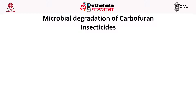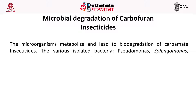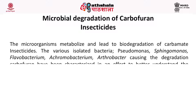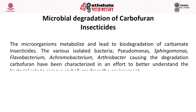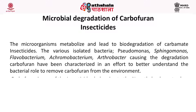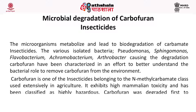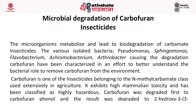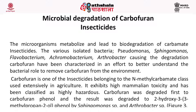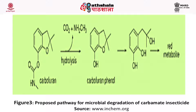Next is microbial degradation of carbamate insecticide. Microorganisms metabolize and lead to biodegradation of carbamate insecticides, and also help to degrade carbofuran. Various isolated bacteria — Pseudomonas, Flavobacterium, Arthrobacter, etc. — causing degradation of carbamate have been characterized to better understand the bacterial role in removing carbamate from the environment. Carbofuran is one insecticide belonging to the N-methyl carbamate class used extensively in agriculture; it exhibits high mammalian toxicity and has been classified as highly hazardous. Carbofuran was degraded first to carbofuran phenol, which was then degraded to 2-hydroxy-3-butenyl phenol by Sphingomonas species and Arthrobacter species. The pathway for microbial degradation of carbamate insecticide is shown in a figure.